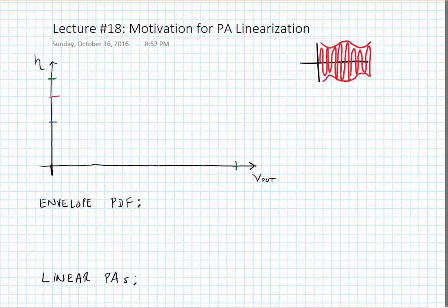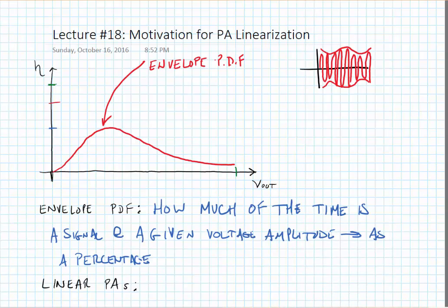Depending upon the type of modulation used, there will be what's called an envelope PDF or probability density function. What this envelope PDF tells us is how long the signal is likely to spend at any one given voltage output amplitude. This tells us how much of the time the signal is at a given voltage amplitude, and it's usually expressed as a percentage or fraction. The area under the curve should equal 1 or 100%.